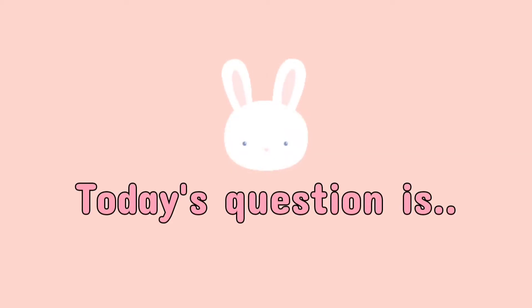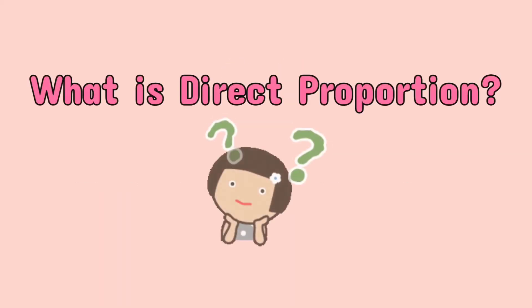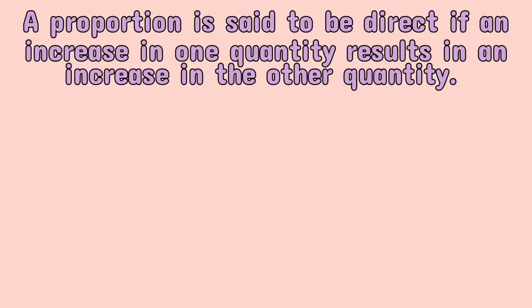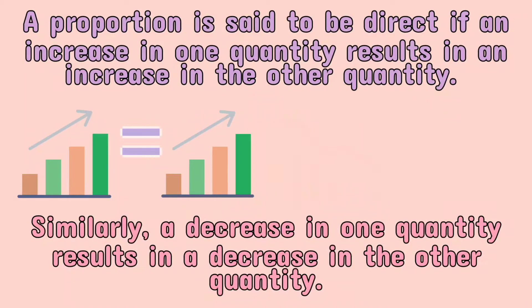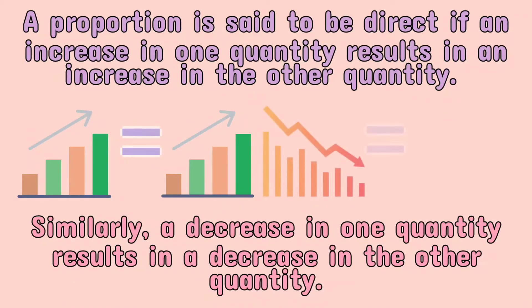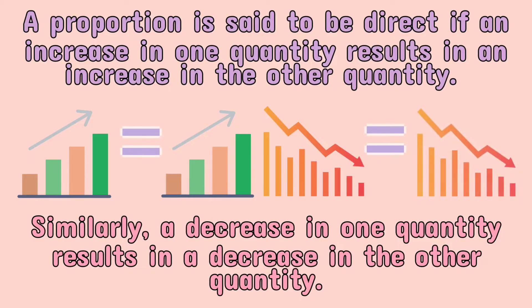Today's question is: What is direct proportion? A proportion is said to be direct if an increase in one quantity results in an increase in the other quantity. Similarly, a decrease in one quantity results in a decrease in the other quantity.